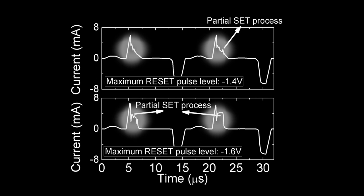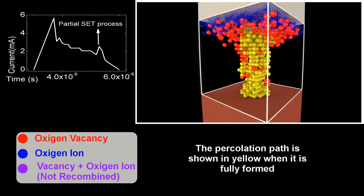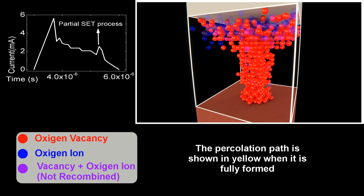A partial set can occur within a reset process. This is based on the competition between the generation of new vacancies, which depends on the magnitude of the electric field but not on the field direction, and the recombination of vacancies with ions coming from the titanium layer.